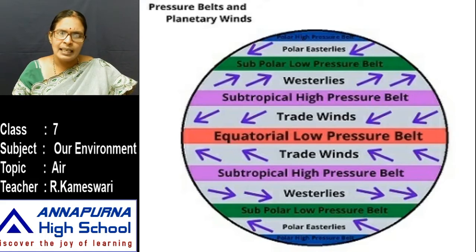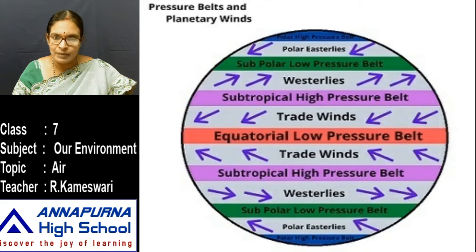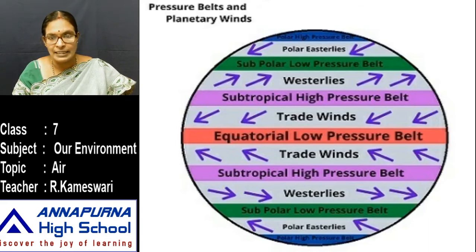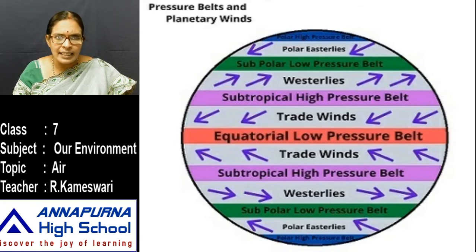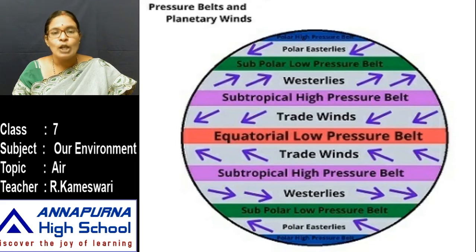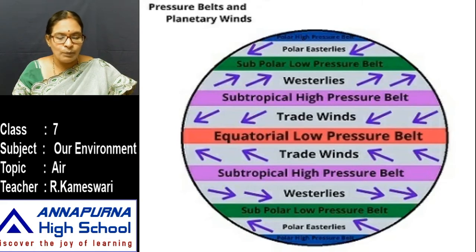All winds blow from high pressure areas to low pressure areas. Here you see the sub-tropical high pressure area — winds coming down because it is a high pressure area. They blow toward the sub-polar low pressure area, which is a low pressure area. So winds always move from high pressure to low pressure.